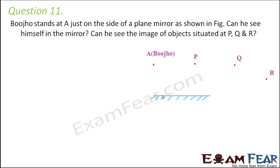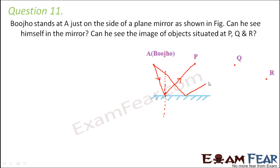A ray of light incident from here might go like this, because this is the normal to the surface — this is the incident ray and this is the reflected ray. A ray of light falling on the mirror like this might go like this. In any case, do you see that the reflected ray might reach Bujo?